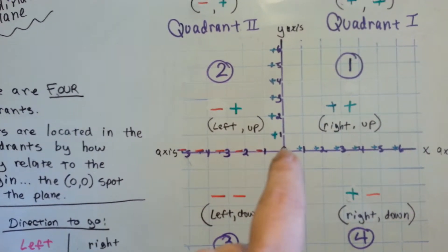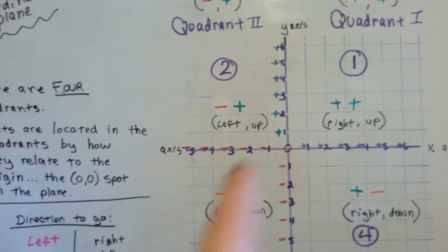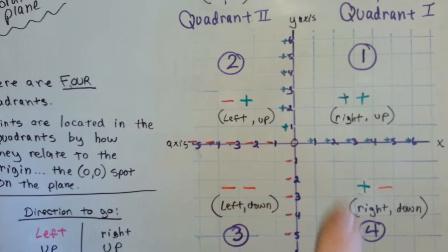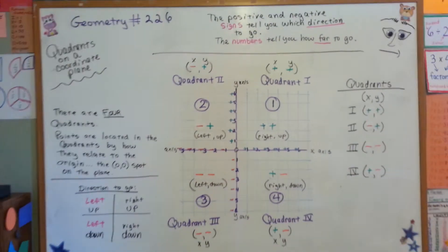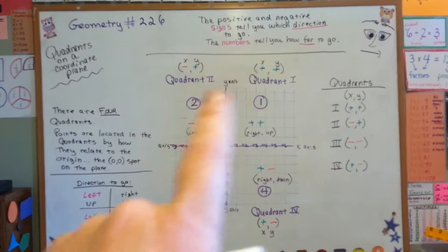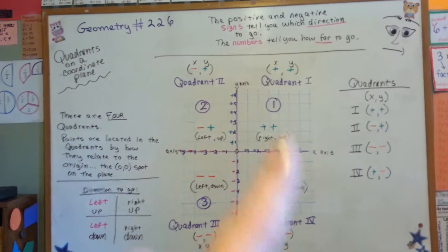And this center part right here, this zero, is the zero-zero, which is the origin. So I'm going to take a step back so you can get a really good look at this. And here is our coordinate plane, and these are the quadrants.